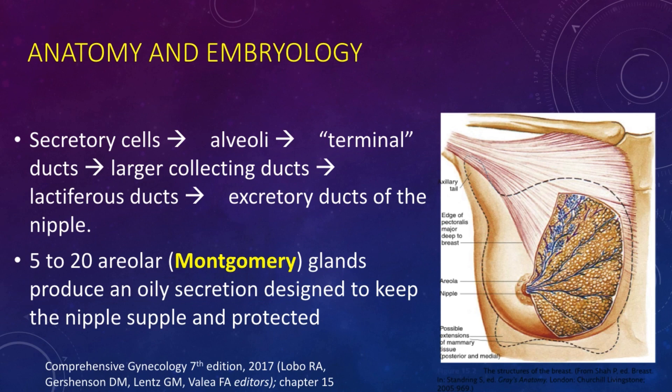Secretory cells drain into the alveoli, which drain into the terminal ducts that coalesce into larger collecting ducts and join ducts from other lobules, ending in lactiferous ducts terminating at the excretory ducts of the nipple. Five to 20 areolar glands, or Montgomery glands, produce an oily secretion designed to keep the nipple supple and protected, particularly during breastfeeding. They also produce a volatile compound implicated in stimulating the infant's appetite through olfactory pathways. The glands are located in the areola and on the nipple; blockages or irritation can result in significant problems.